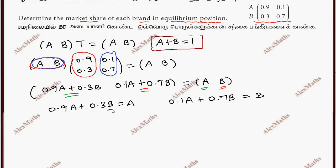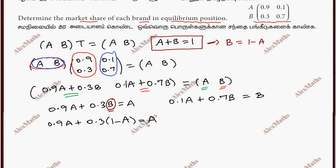From A plus B equals 1, we get B equals 1 minus A. Substituting into Equation 1: 0.9A plus 0.3 times (1 minus A) equals A.